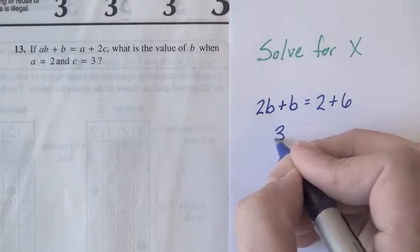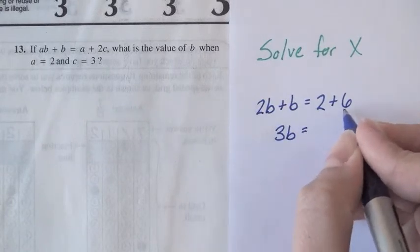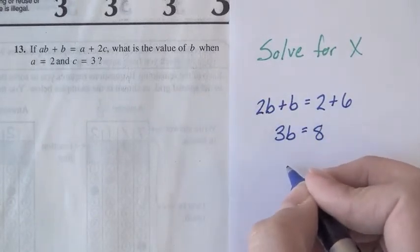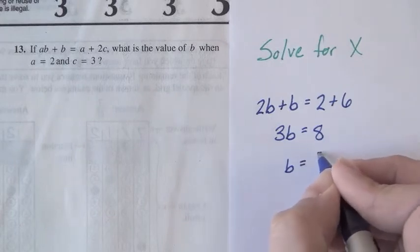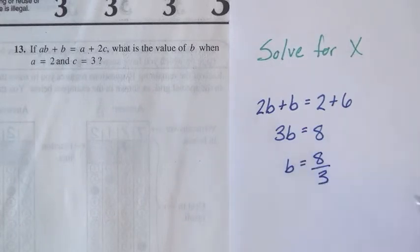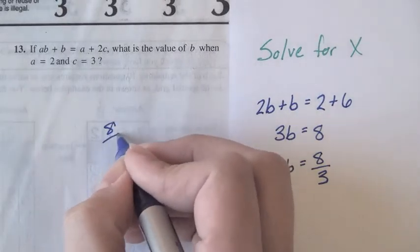2B plus B is 3B, and that's equal to 8. So if we're going to solve for B, we'll divide both sides by 3 and get B is equal to 8 thirds. And that's the correct answer, 8 thirds.